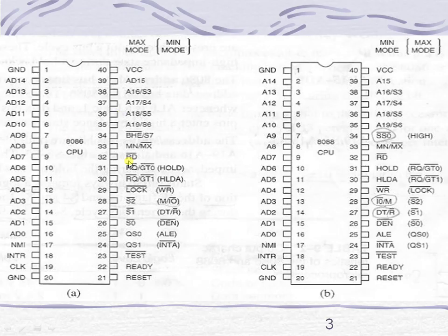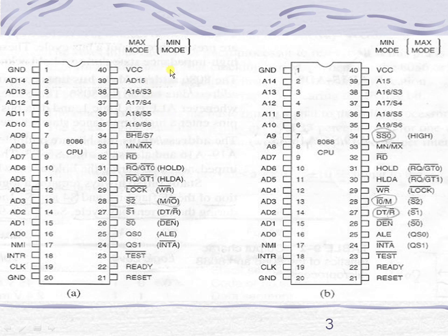The pin structure of 8086 processor is represented in two forms — one to show the minimum mode signals and the other to show the maximum mode signals. It totally contains 40 pins, from 1 to 40. Out of these 40 pins, some pins are common in minimum as well as maximum mode, providing the same functionality in both. Some other pins have two names and will have separate functionality in minimum versus maximum mode. Pins 1 to 23 and 32 to 40 are common signals, while pins 31 down to 24 provide separate functionality according to their mode.